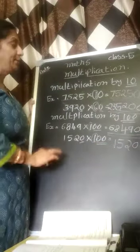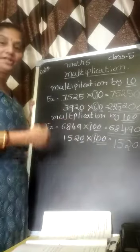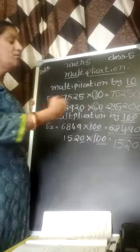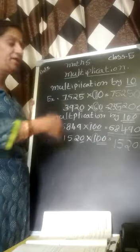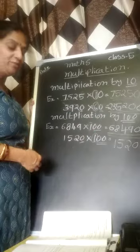Like that, you have to do 1000, 10,000. How many 0's are there? First, you multiply with the number. Then you put the 0's. This is a very easy method.